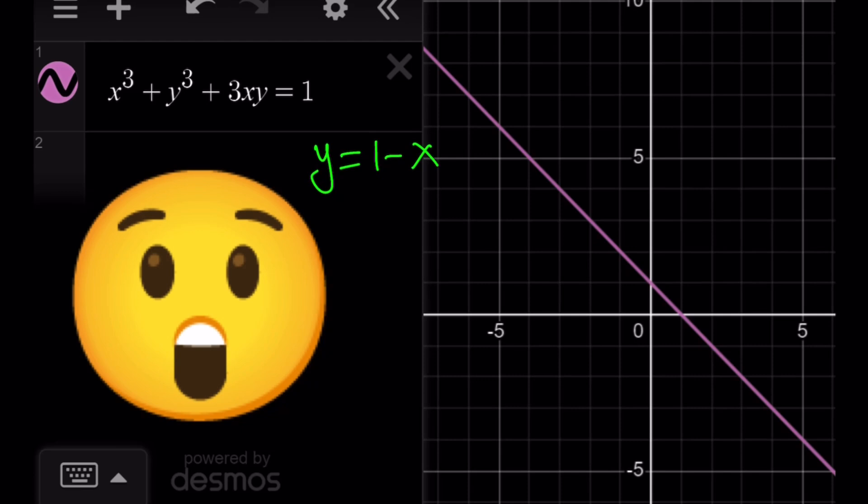Of course, negative 1, comma negative 1 is a point, but Desmos does not show that, unfortunately. Too bad. I don't know why, but it just doesn't show it. It's actually part of the equation. But anyways, this brings us to the end of this video. Thank you for watching. I hope you enjoyed it.